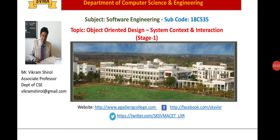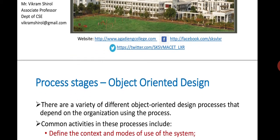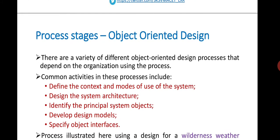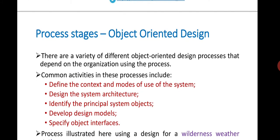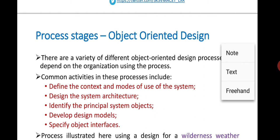Dear learners, in this video we will start discussing about the object-oriented design process. Under this, we are going to start with our first stage, that is system context and interaction. Basically, there are five different stages in the object-oriented design process.